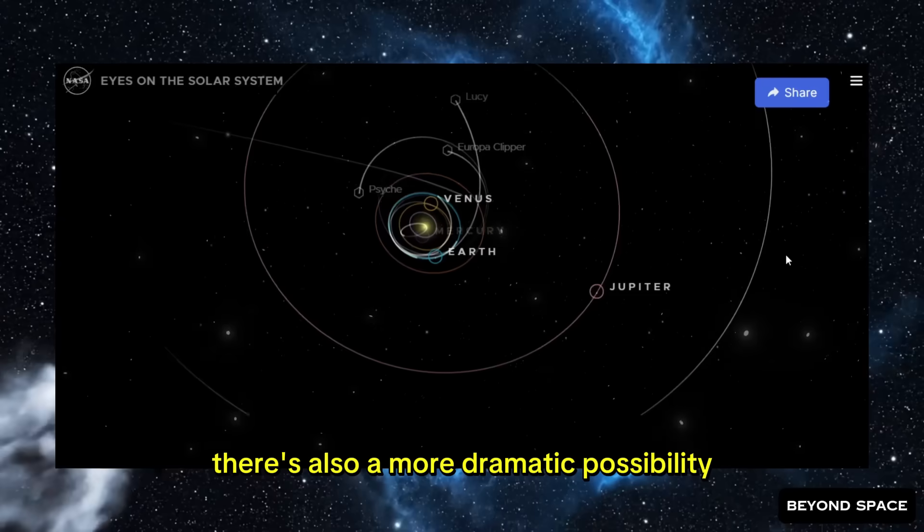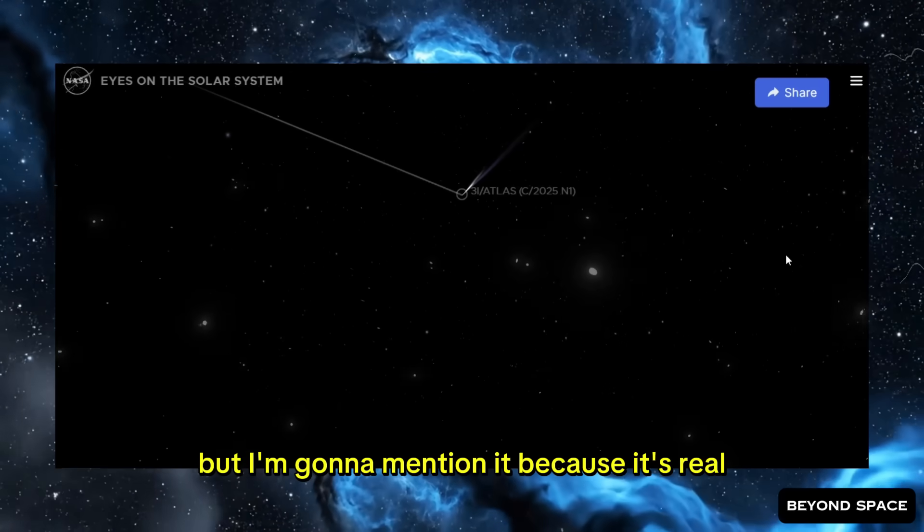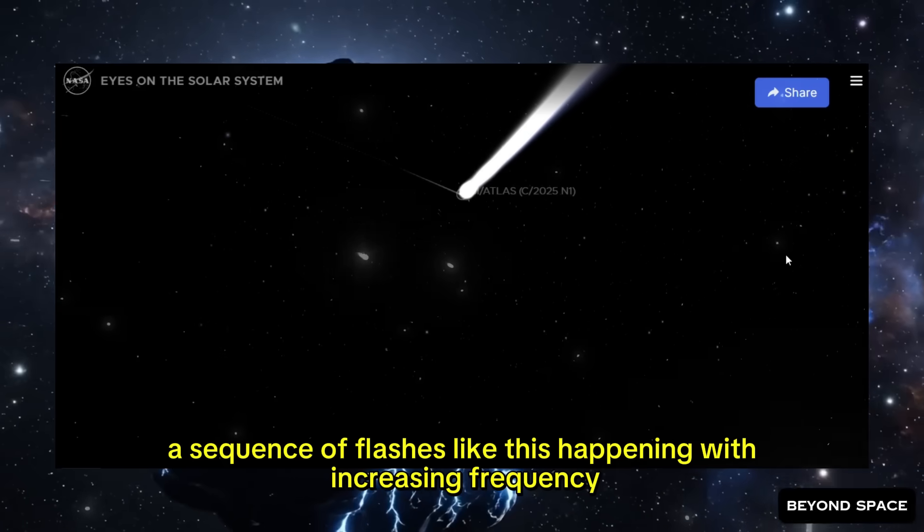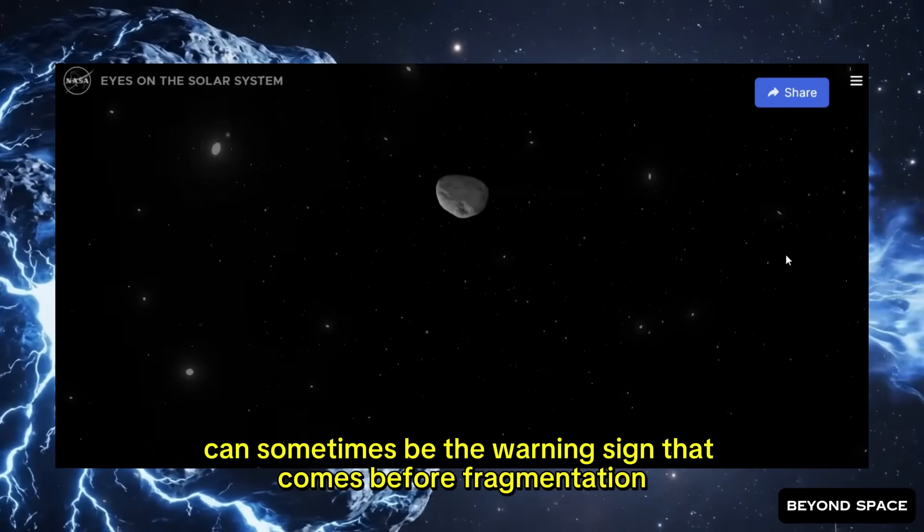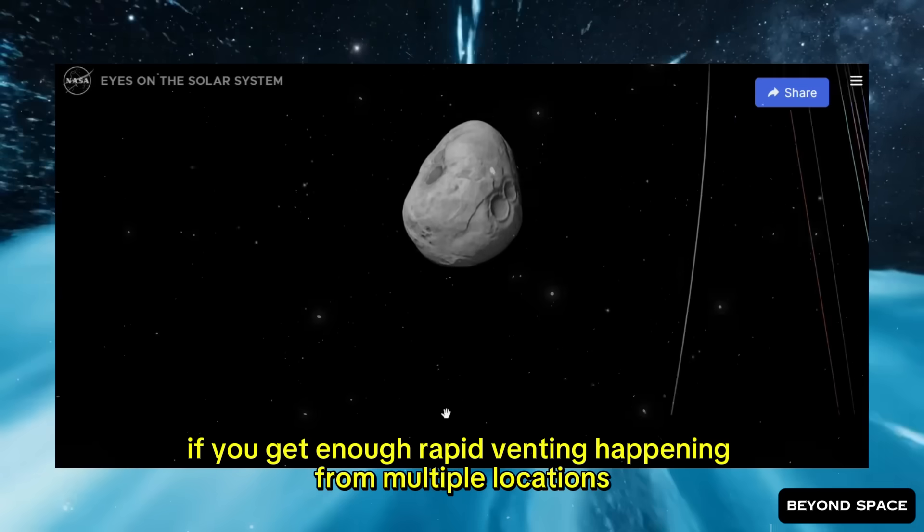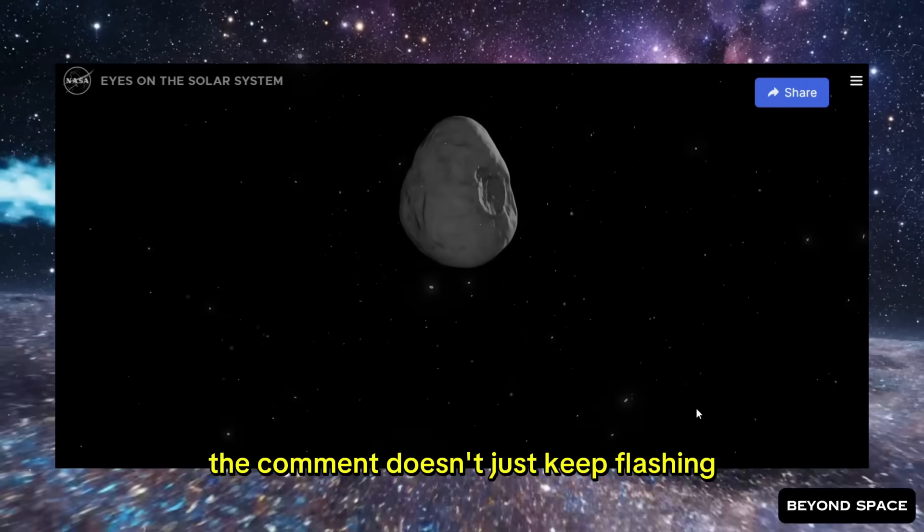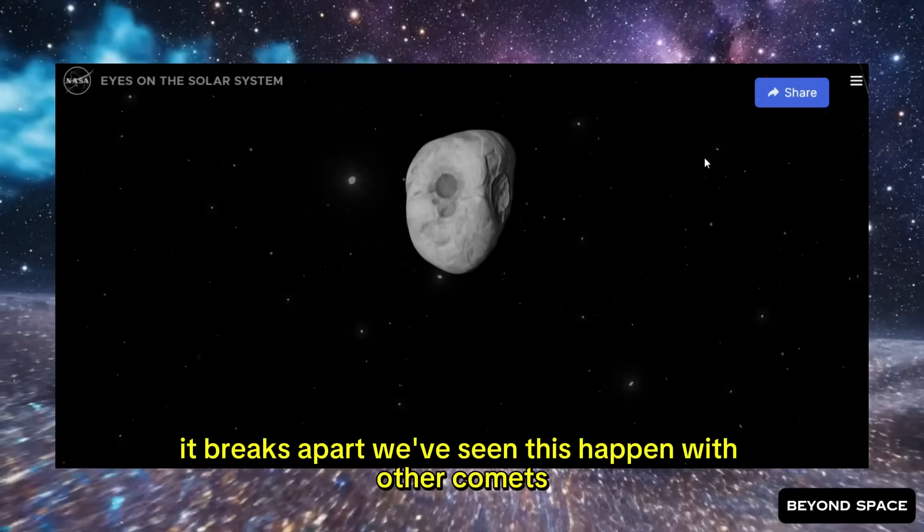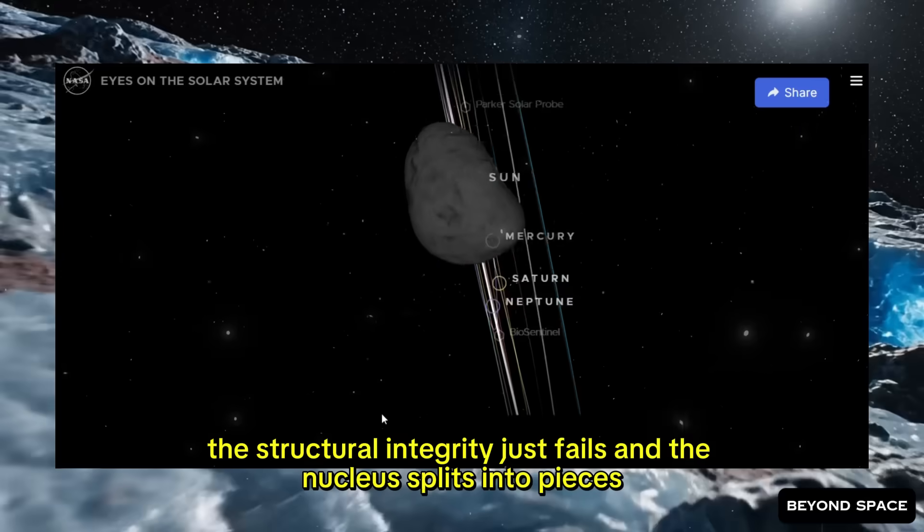There's also a more dramatic possibility that nobody really wants to say out loud yet, but I'm going to mention it because it's real. A sequence of flashes like this, happening with increasing frequency, can sometimes be the warning sign that comes before fragmentation. If there's enough internal stress building up, if you get enough rapid venting happening from multiple locations, the comet doesn't just keep flashing. At some point, it cracks. It breaks apart. We've seen this happen with other comets. The structural integrity just fails and the nucleus splits into pieces.